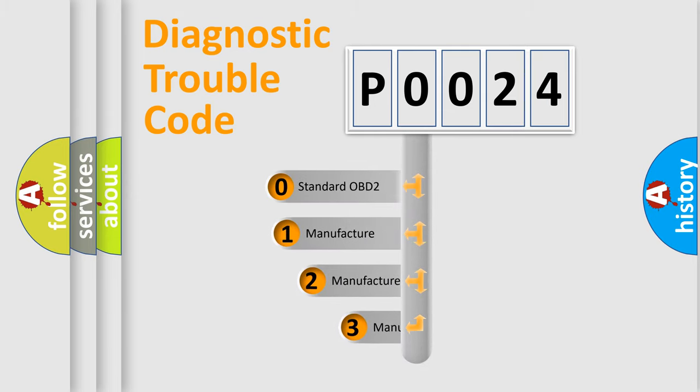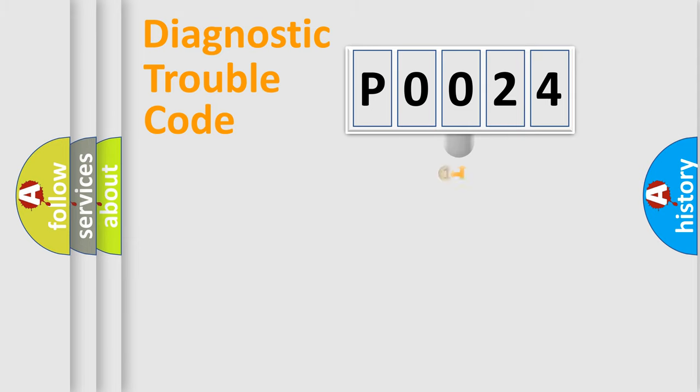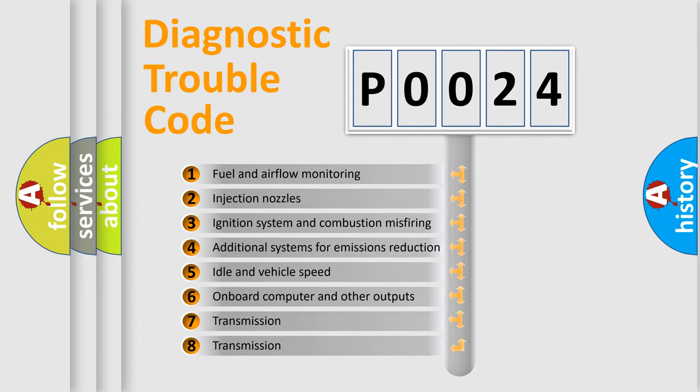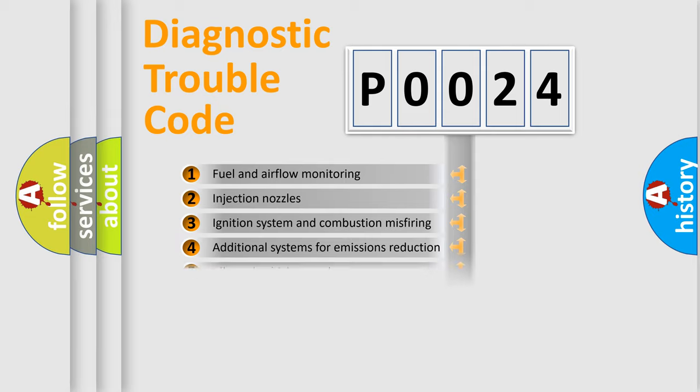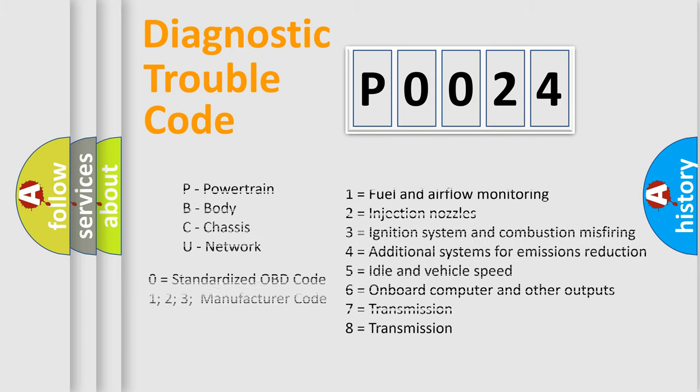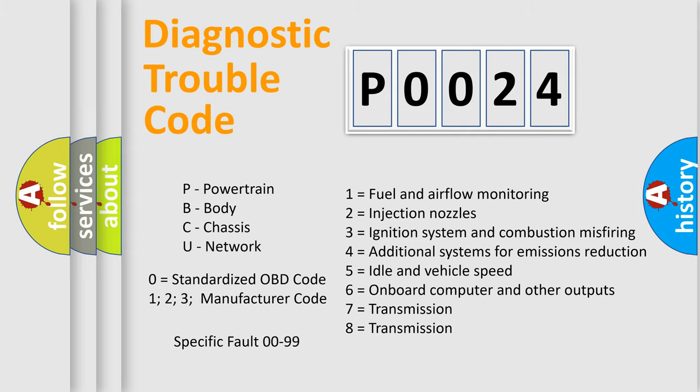This distribution is defined in the first character code. If the second character is expressed as zero, it is a standardized error. In the case of numbers 1, 2, or 3, it is a manufacturer-specific expression of the car-specific error. The third character specifies a subset of errors. The distribution shown is valid only for the standardized DTC code. Only the last two characters define the specific fault of the group. Let's not forget that such a division is valid only if the other character code is expressed by the number zero.